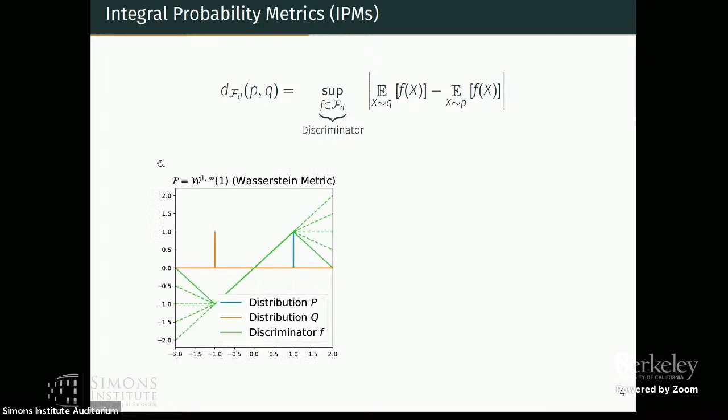So in our work, a good example of this is for different choices of f of D, you can actually get different metrics here. And one classical example is the Wasserstein metric, which, if you assume that the set of discriminator functions is one Lipschitz, then you kind of get the Wasserstein distance out of this.